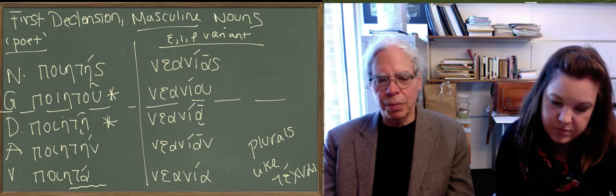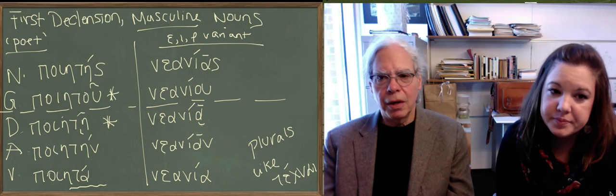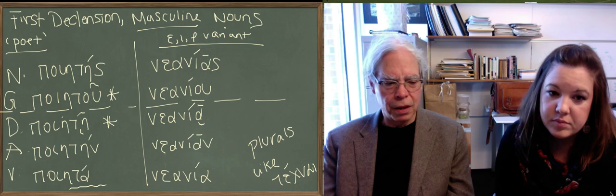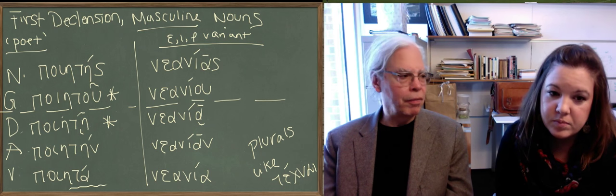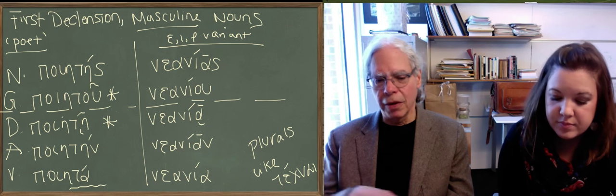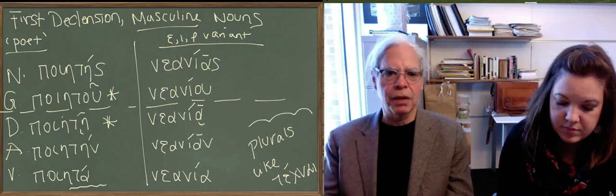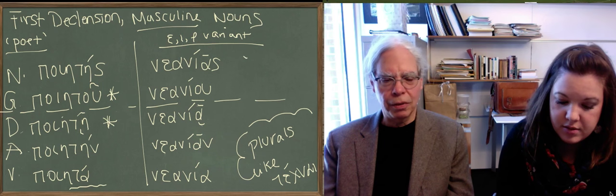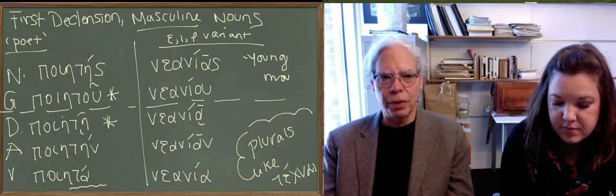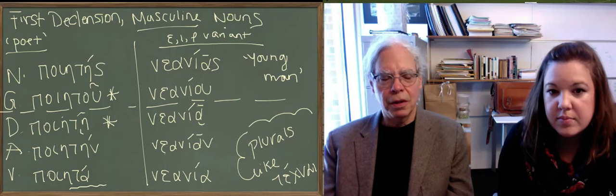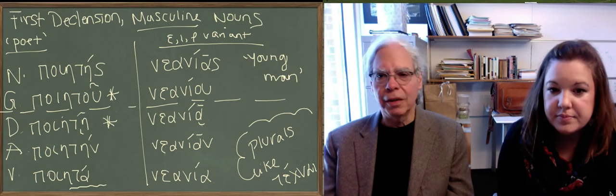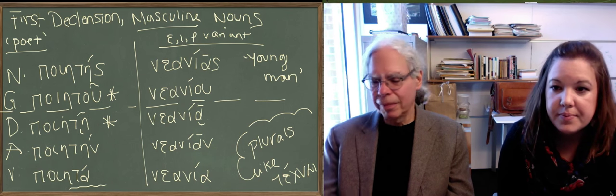So the relationship holds. Where the base type has an eta, the epsilon iota rho variants have a long alpha. And again, to repeat, plurals of all of these nouns are the same as the plural of tekne. So teknai, teknon, tekneis, tekneas. That's the same for poietes, arnias, gefura, and thalata. So there's nothing new to learn there.